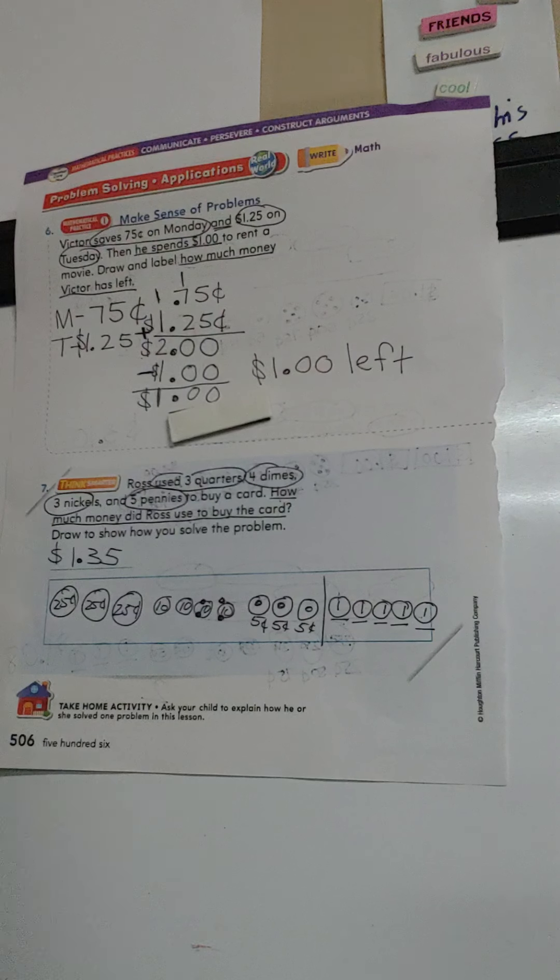All right, boys and girls. That is it for Lesson 7.7 today. Your homework will be page 507 and 508. So go ahead and try those. It's word problems. I know you can do it. Look at these papers that we did. Go back and watch this video. Pause it. Rewind it. Whatever you need to do. I will post the answers for the homework for 7.7. All right, boys and girls. I'll see you later.